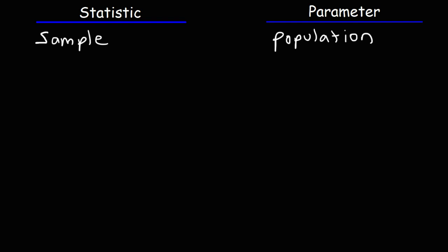Let's talk about some variables that highlight the differences between statistics and parameters. The symbol x-bar represents the sample mean — that would be a statistic because it describes the mean of the sample. The symbol mu is the mean of the population — that's a parameter, a characteristic of the population.